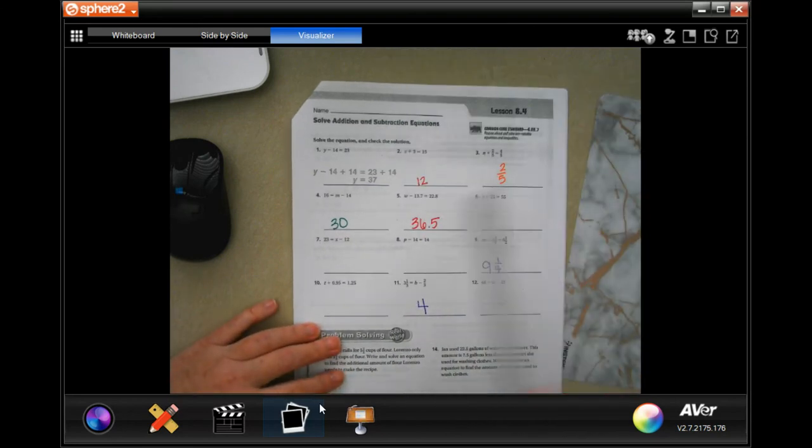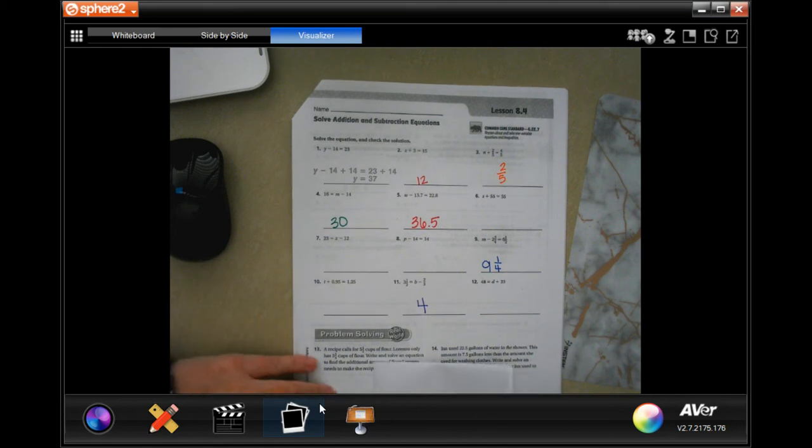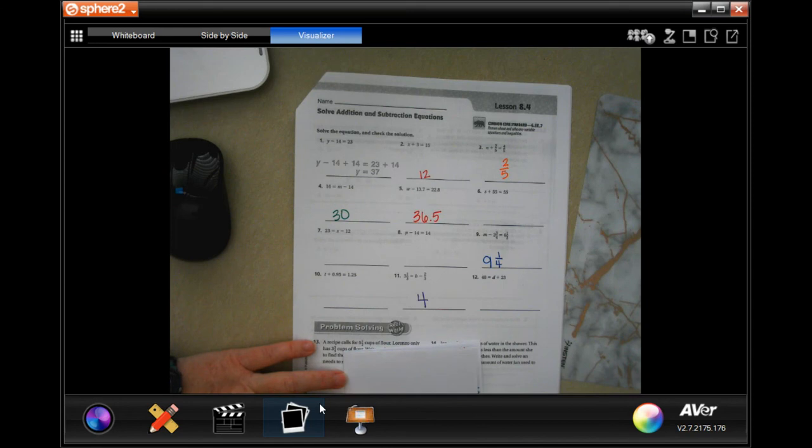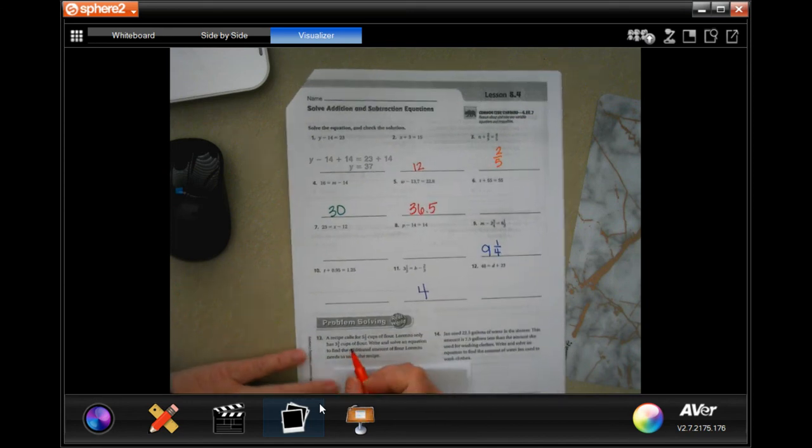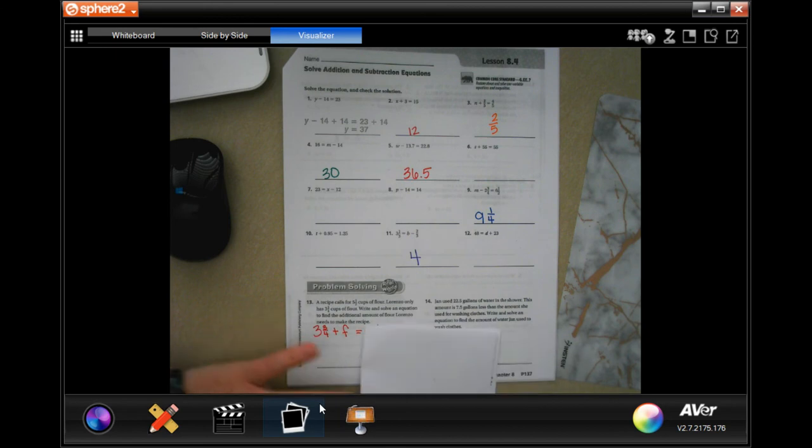You guys are doing 6, 7, 8, 10, 12. We will go ahead and do 13 and 14. So, 13 says, a recipe calls for 5 1⁄2 cups of flour. Lorenzo only has 3 1⁄4 cups of flour. Write and solve an equation to find an additional amount of flour Lorenzo needs to make the recipe. Well, he has 3 3⁄4, right? He needs however many cups of flour to make 5 1⁄2 cups, right? Now let's do the math.